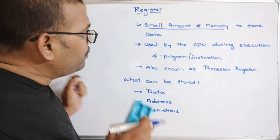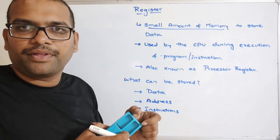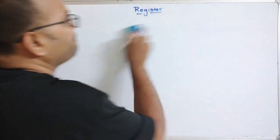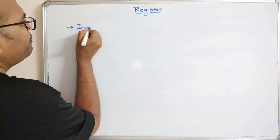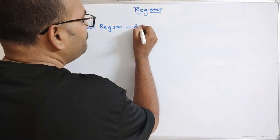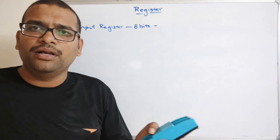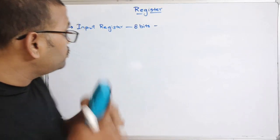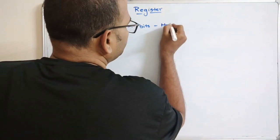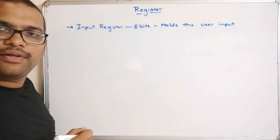Now we will see the commonly used registers. The first one is the Input Register, which is 8 bits in size. The name itself indicates its purpose: any input given by the user will be stored in this input register while processing.